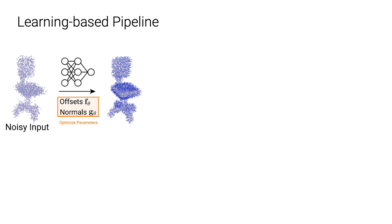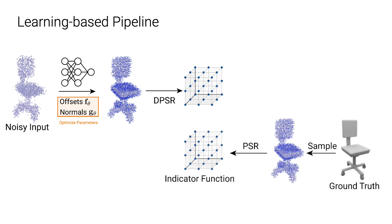Here we show the learning-based pipeline of our model, input some noisy unoriented point clouds. The goal is to learn a neural network to predict both offsets and normals of those points. This clean oriented point clouds output from the network is passed into our DPSR and obtain an indicator grid.